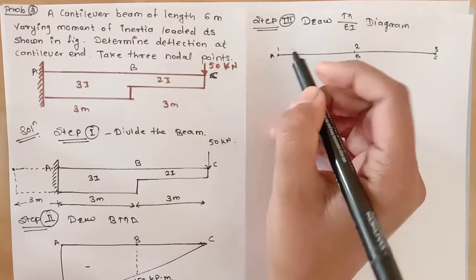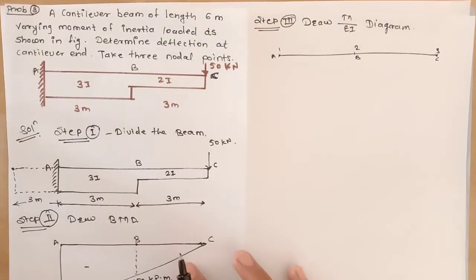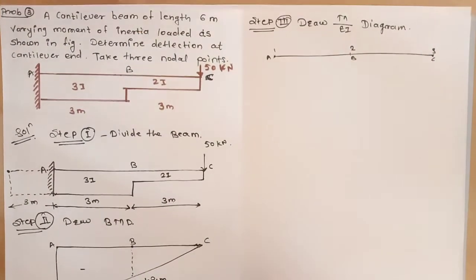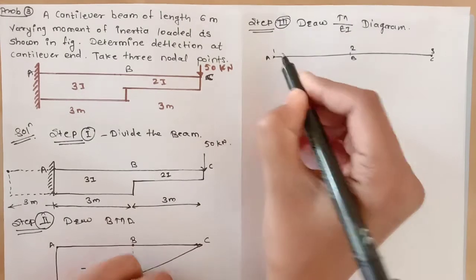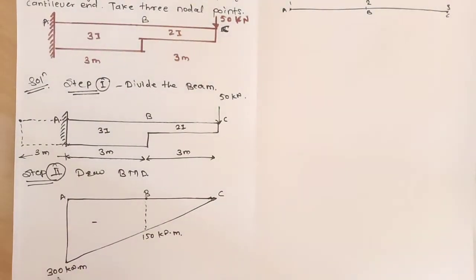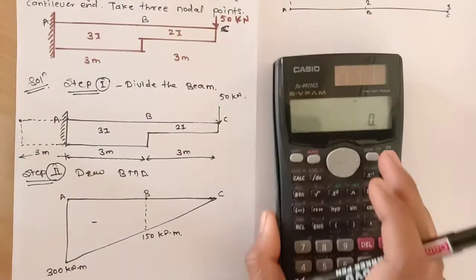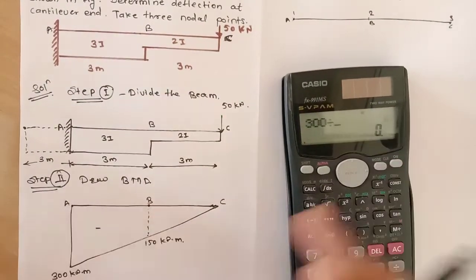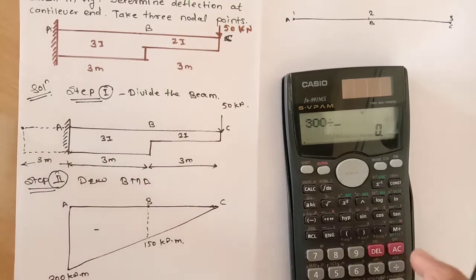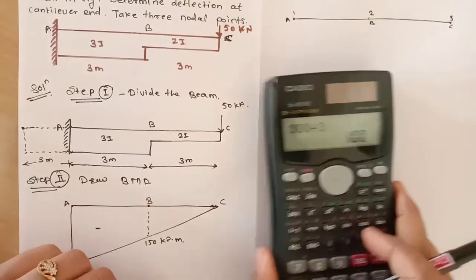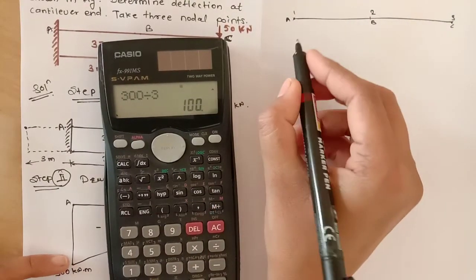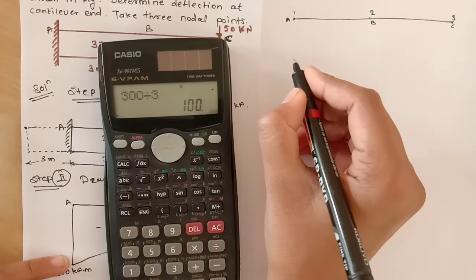At point A, the moment is 300 kN·m, already calculated in the previous step. So the M/EI value: 300 divided by EI. Looking at the AB member, I is 3I, so divide by 3. The M/EI value at point A is 100 divided by EI.